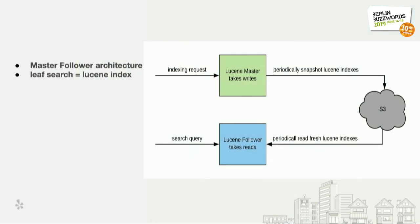Here I'm showing the leaf search nodes. Each node essentially serves one Lucene index. It's a master-follower architecture backed by REST: the indexing request goes to a master which takes the writes, written to the Lucene index periodically. Typically every three to four hours we would snapshot this index to S3. The followers — a pool of followers — would be restarted periodically, pull these Lucene indexes from S3, and serve the queries.